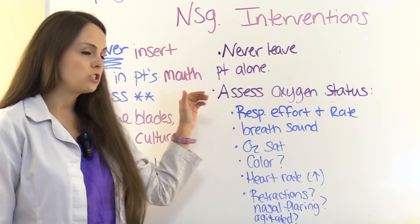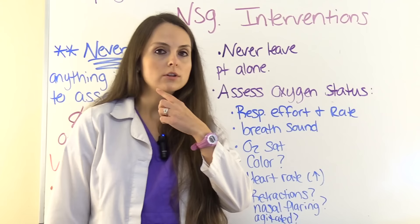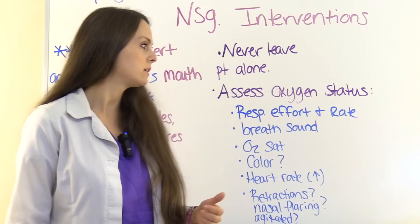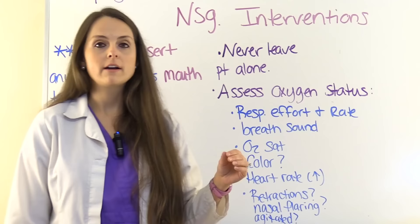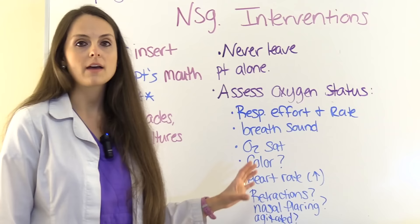Listen to breath sounds and check for stridor. Monitor oxygen saturation — is it normal? Assess their color, as it tells a lot: are the lips turning cyanotic, is the skin looking blue? That means they're not getting enough oxygen. Check their heart rate — when patients are very hypoxic, the heart rate will shoot up and they'll become tachycardic. Are there chest retractions, nasal flaring, or agitation? All of these together mean the airway is closing off fast and action is needed.